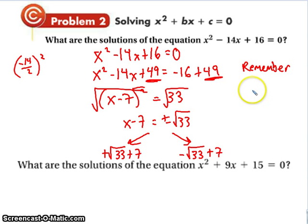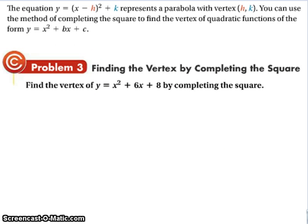So step number one, get the c value away. So we want c to be over here. And then we go through the process of completing the square. We add it to both sides. And then we factor it just like previous work. You can work on that one.